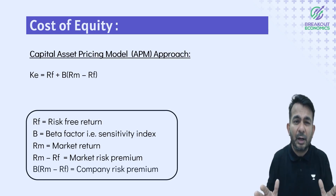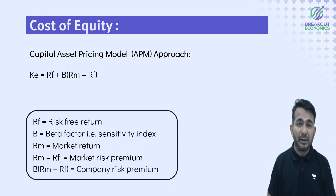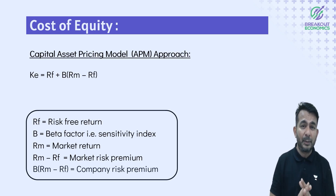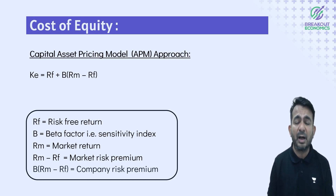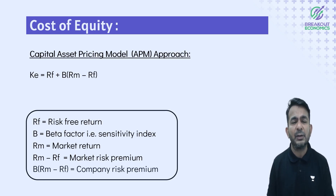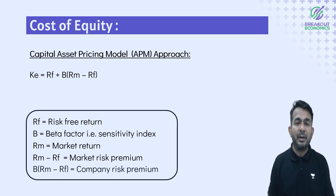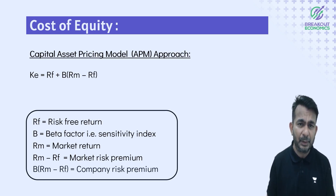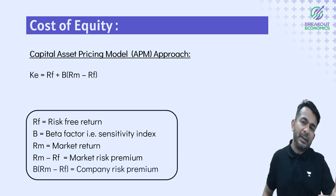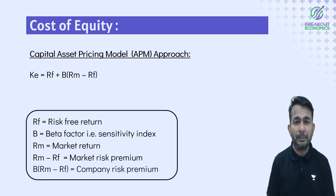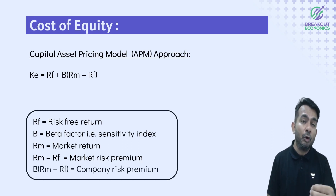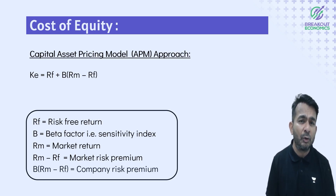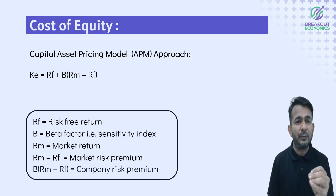Finally, there is the Capital Asset Pricing Model — a powerful approach. According to CAPM: KE (or Re) = RF + β(RM - RF). Here RF is the risk-free return, β is beta, RM is the market return, (RM - RF) is the market risk premium, and β(RM - RF) is the company's risk premium.